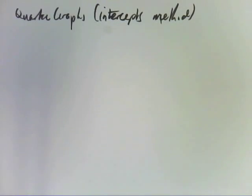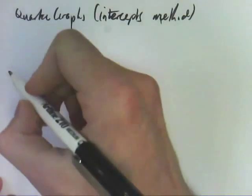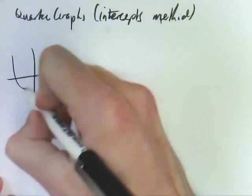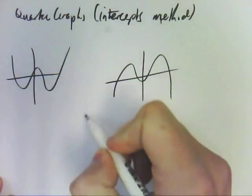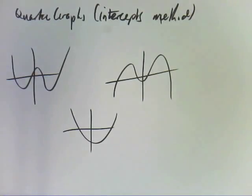So, quartic graphs are shaped like this if they're positive, and this if they're negative.